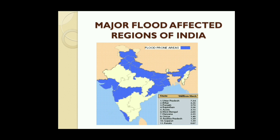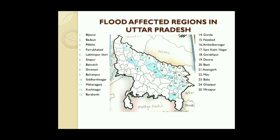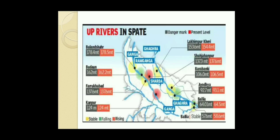The major flood-affected regions in India are: Uttar Pradesh, Bihar, Punjab, Rajasthan, Assam, West Bengal, Haryana, Odisha, Andhra Pradesh, Gujarat, and Kerala. Every year approximately 25 districts of Uttar Pradesh are most affected by floods, as shown in the map. The map also shows UP rivers at danger marks and their present levels in 2019.